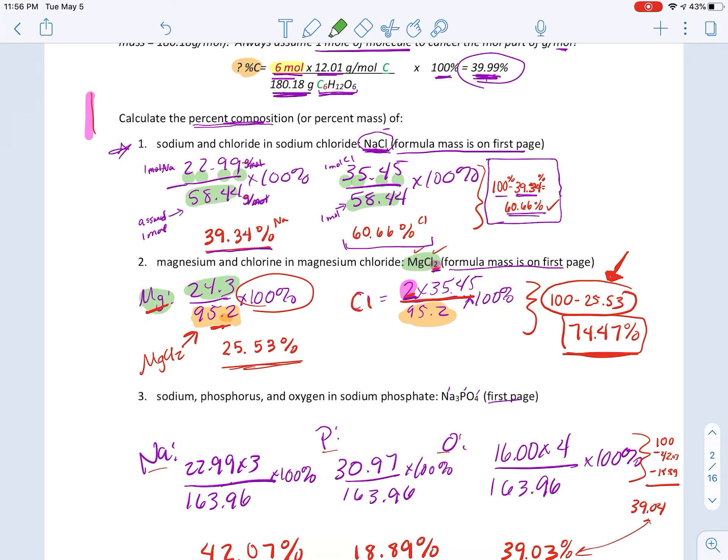Sig figs and percentages, usually they're a little squishy. You can take them out to, you know, a tenths or a hundredth. It's usually fine.